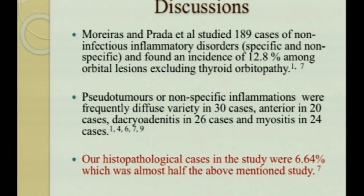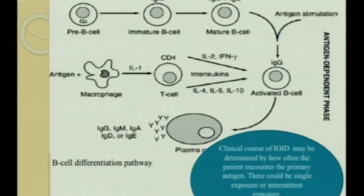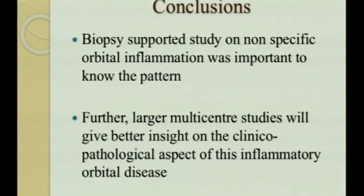Our histopathological cases were almost half the cases of this series. The clinical course of IOID is particularly determined by how often the patient encounters the primary antigen, and there could be a single, multiple, or intermittent exposure. If a self-antigen is involved, the chronic autoimmune process sets in. To conclude, biopsy-supported studies on non-specific orbital inflammation are important to know the pattern, and larger multicentric studies will give better insight on the clinical-pathological aspects of inflammatory orbital disease.